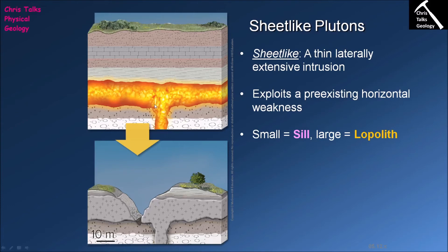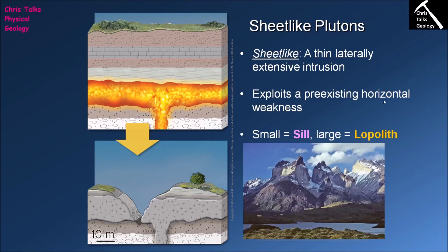When this kind of sheet-like feature is relatively small from a geologic perspective, we classify it as a sill. However, if the feature is quite large, we classify it as a lopolith. In this picture we can see an example of a lopolith — extremely mountainous terrain with a band of medium grey rock. You can see the upper edge coming through here and the lower edge here, with darker rocks both beneath and above it. This is a horizontal sheet-like intrusion classified as a lopolith due to its very large size.